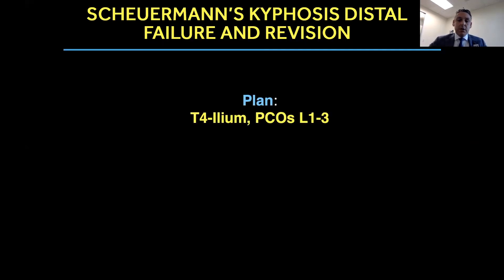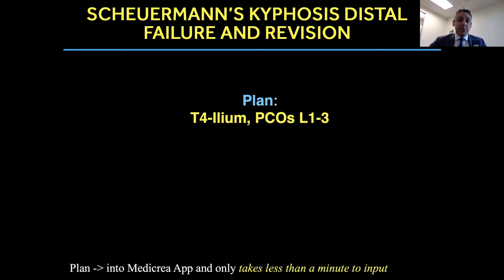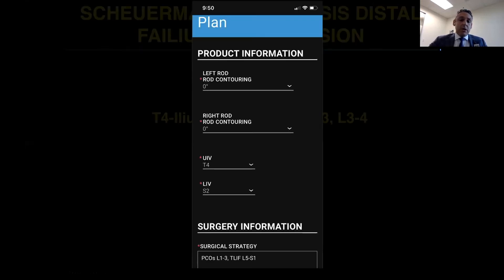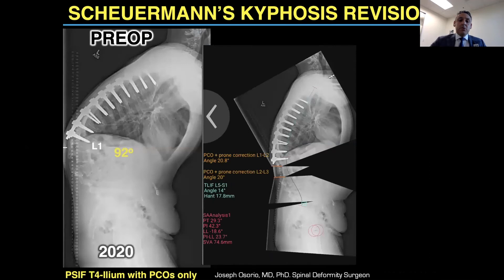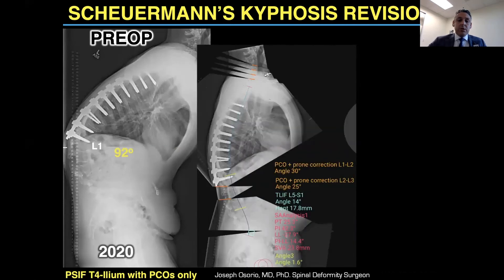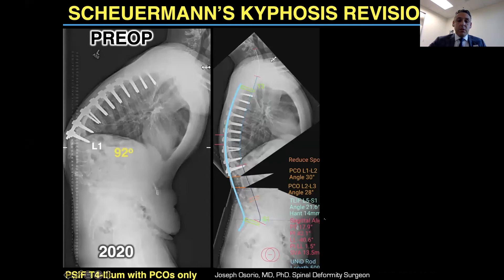On my phone, the planning takes less than a minute. All I have to do is use the drop-down for the UIV and LIV, and at the very bottom I can type in where my PCOs will be, or if I'm doing any interbodies, where that will take place. I share this case because when I looked at the initial plan, I wanted more correction. There's an easy way to interact with the engineer via the chat function — I said, 'Can you please increase the degrees? I feel like I'll probably achieve more.' We went through a cycle, and finally I was happy with the resulting plan, and that's what was shipped.